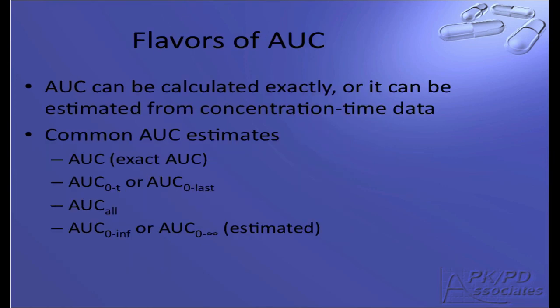Because AUC is a secondary PK parameter, it can be calculated exactly from the primary PK parameters, or it can be estimated using concentration time data. Some common AUC estimates include the exact AUC, AUC 0 to T, or AUC 0 to last, AUC all, and AUC 0 to infinity. Each of these estimates describe, in part, the total exposure of the drug.